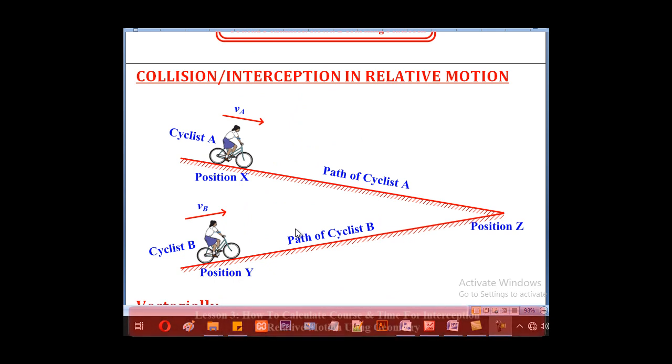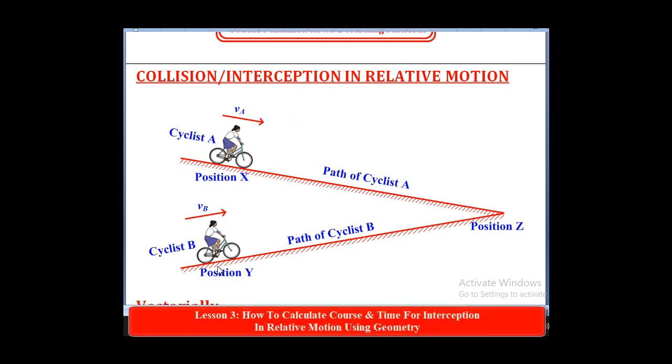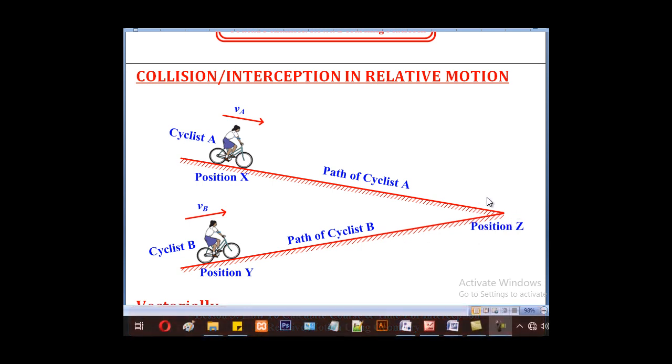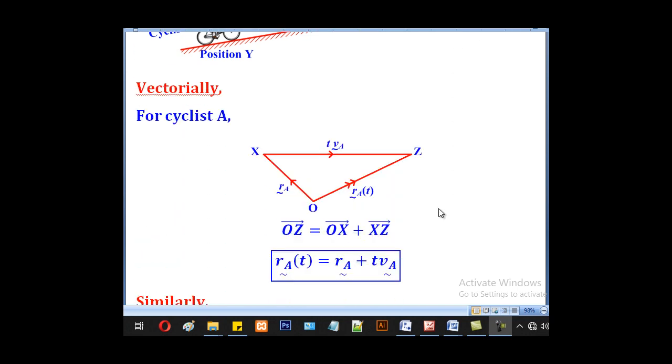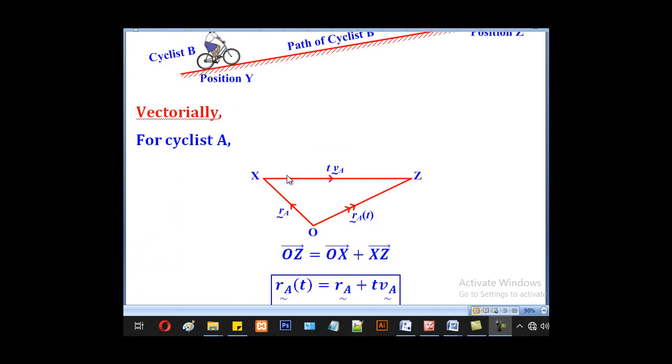Consider two cyclists, cyclist A at position X and cyclist B at position Y. If cyclist A is moving with velocity VA and cyclist B is moving with velocity VB and they intercept at position Z after time T, it implies that vectorially, for cyclist A, he will have moved a displacement of VA times T to position Z.